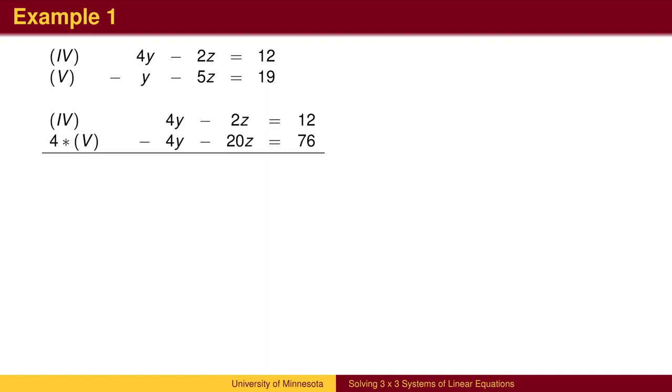We can multiply equation 5 by 4, add it to equation 4, and solve for z. We can then plug in the value of negative 4 for z into any previous equation, like equation 5, to find y. And then plug y and z into equation 1 to find x. The answer is the point (1, 2, -4).